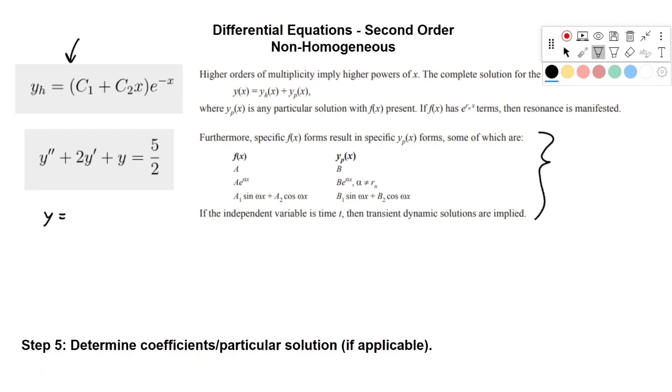And it tells you that if f of x is of the form a, where a is just some constant value, then the particular solution, y sub p, is of form b. And if it's e to some power, you get that. And if it's a trig function, you would get that.